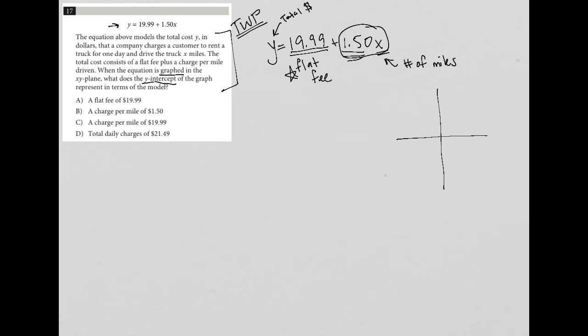What is the y-intercept of this equation? If I do a little bit of rearranging and say y equals 1.50x plus 19.99, we see that this equation matches up with slope-intercept form of a line, y equals mx plus b. And we should know that b, the b term in the equation, represents the y-intercept.